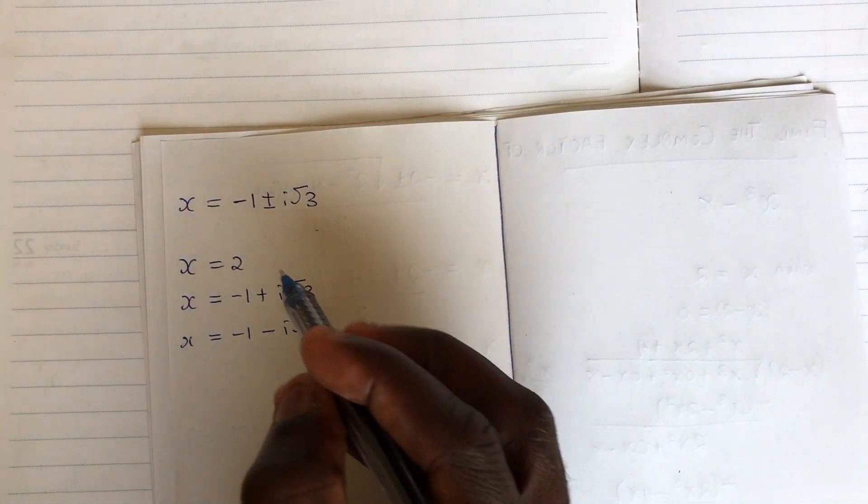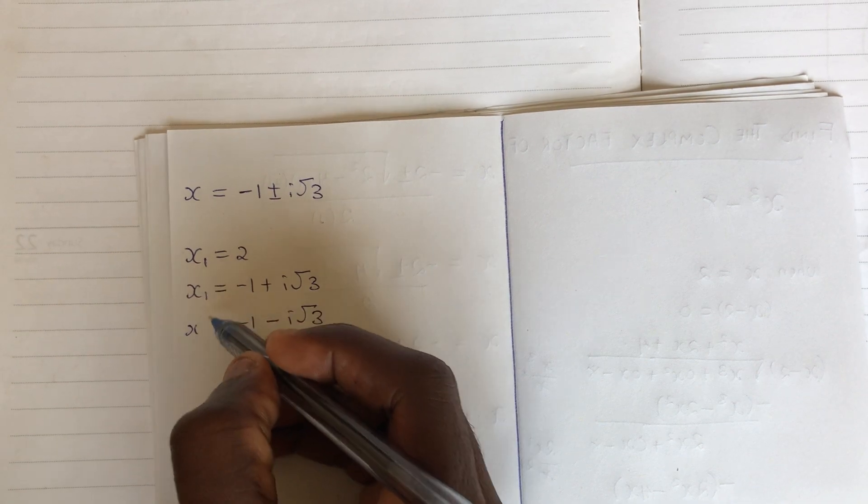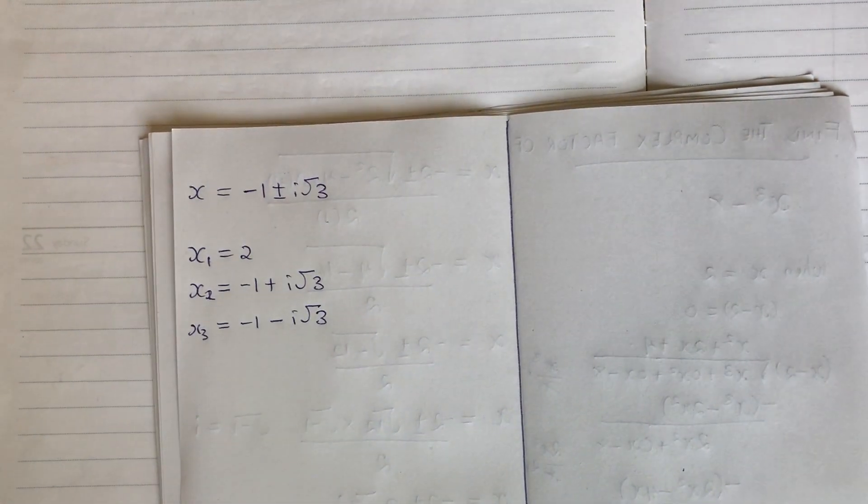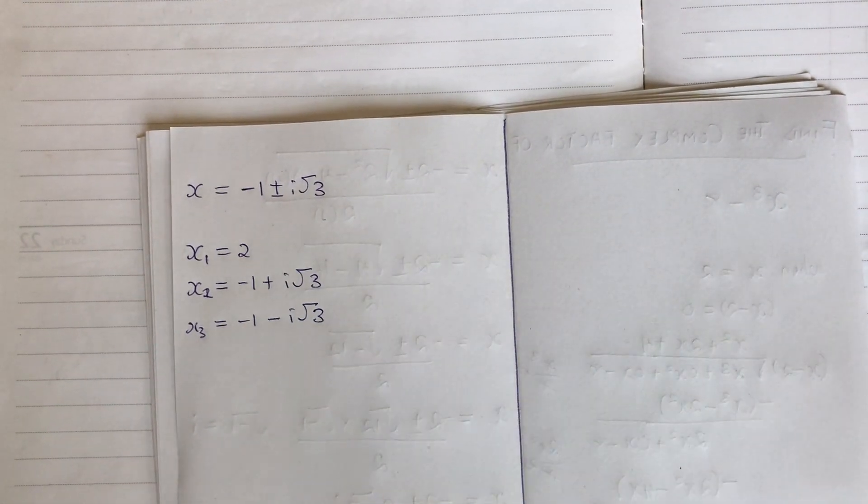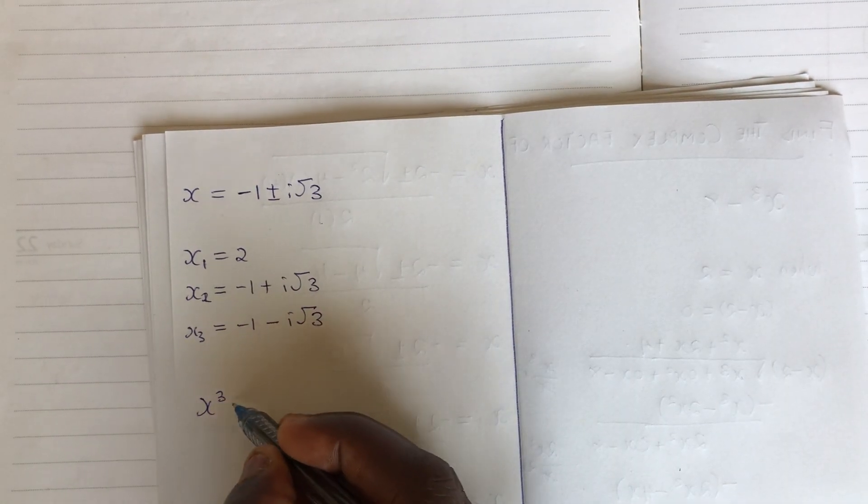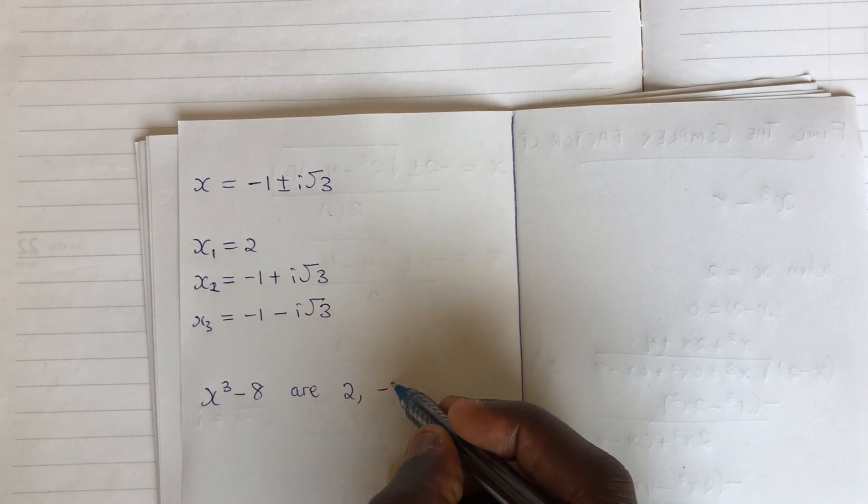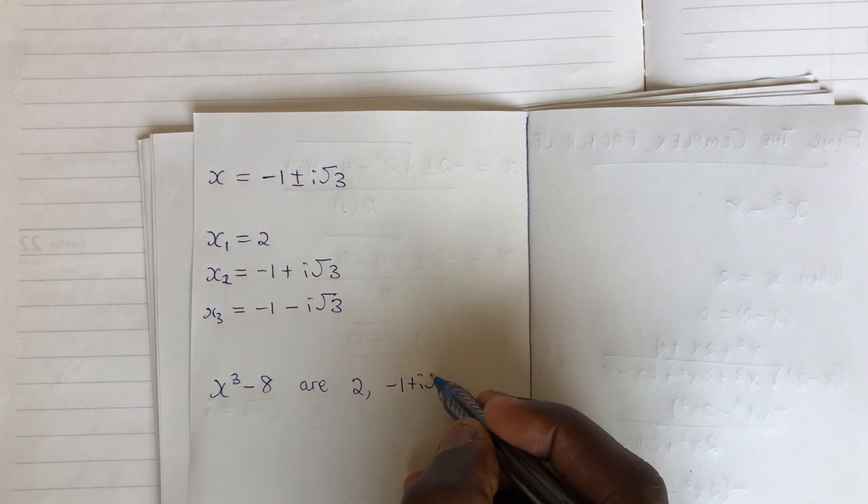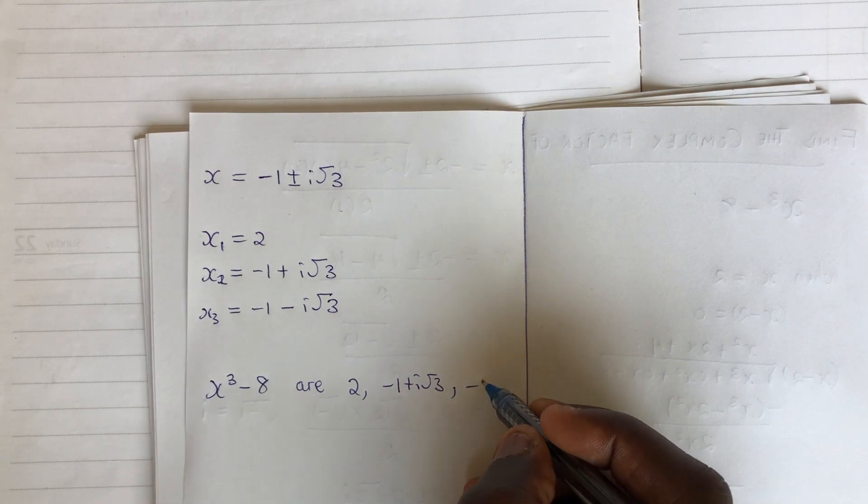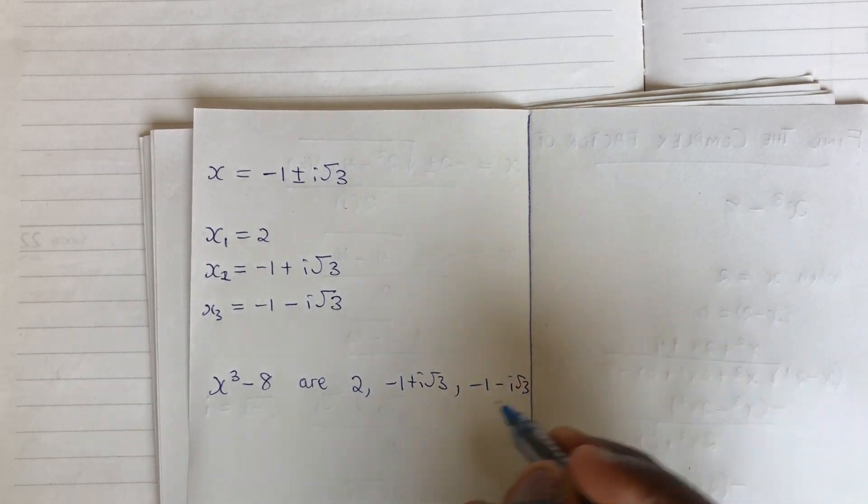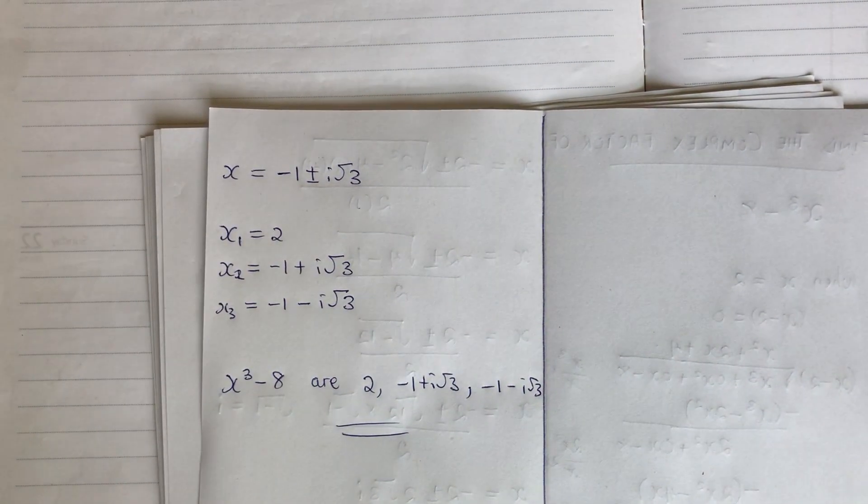So these are our roots. The roots are actually 3. Let me name it x1, x2, x3. So now, this is what we have. So the roots of x cubed minus 8 are the values we have here: 2, minus 1 plus i root 3, minus 1 minus i root 3. And this is our result.